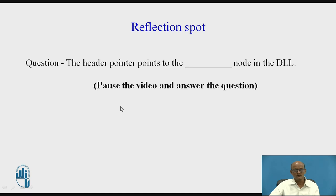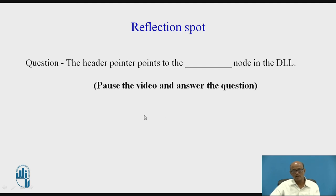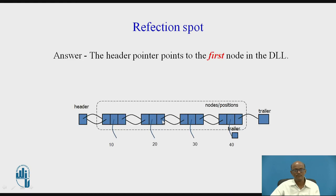Reflection spot — a question based on this topic: the header pointer points to which node in the doubly linked list? Take a pause and answer the question. The answer is: the header pointer points to the first node in the doubly linked list. The header part stores the address of the first node — the node where the data 10 is stored.